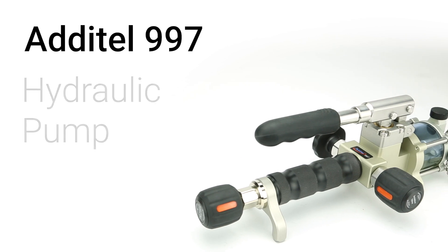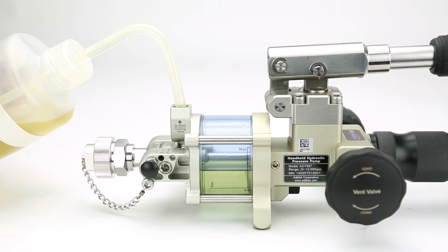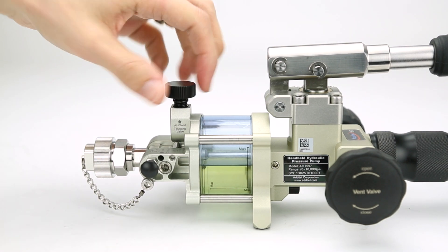The hydraulic pump operates in a very similar way, with a few important distinctions. The Aditel 997 can be operated using mineral oil or deionized water as a media, which can be added by unscrewing the cap on top of the liquid chamber.